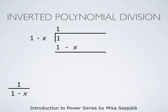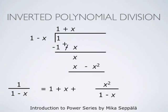Therefore, we write 1 above the line and multiply 1 − x by 1, writing the product below. We subtract 1 − x from 1 by changing signs and adding up. 1 and −1 cancel out and we are left with x. Next, we look for a monomial such that when we multiply the trailing term of 1 − x by that monomial, we get the trailing term of the current remainder, x. That monomial is of course x. So we multiply 1 − x by x, getting x − x². We subtract that from x and get the remainder x². Now we have found the representation 1 / (1 − x) = 1 + x + x² / (1 − x).